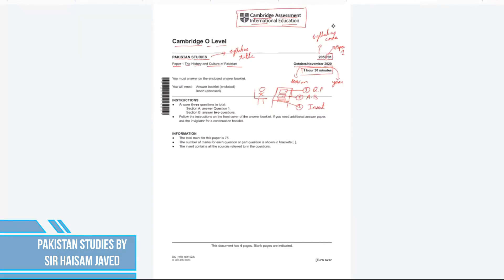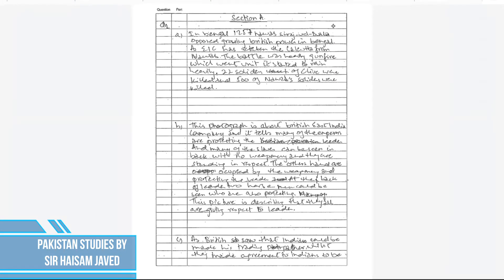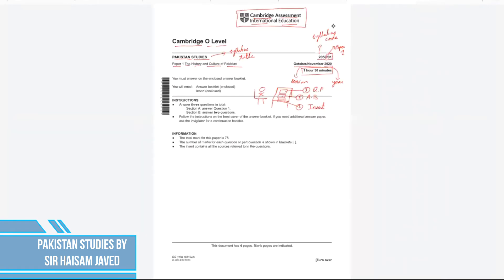Each page of the answer booklet has a column for writing the question number, a column for the part of the question you are attempting, and approximately 33 lines for your answer. If you run out of space, you can always ask the invigilator to give you a continuation booklet, which you would note accordingly.